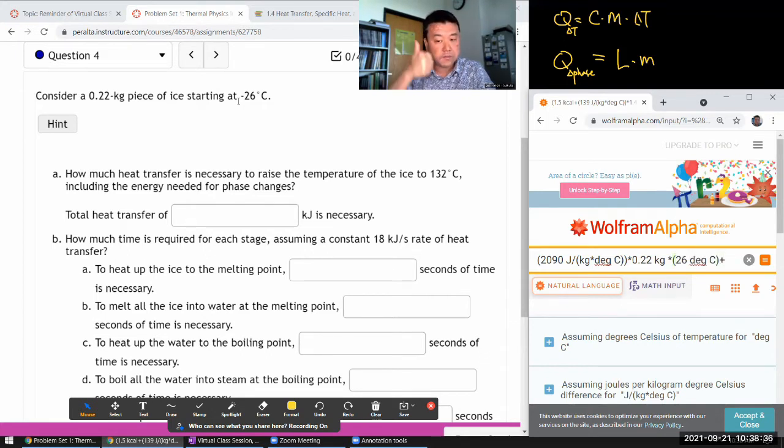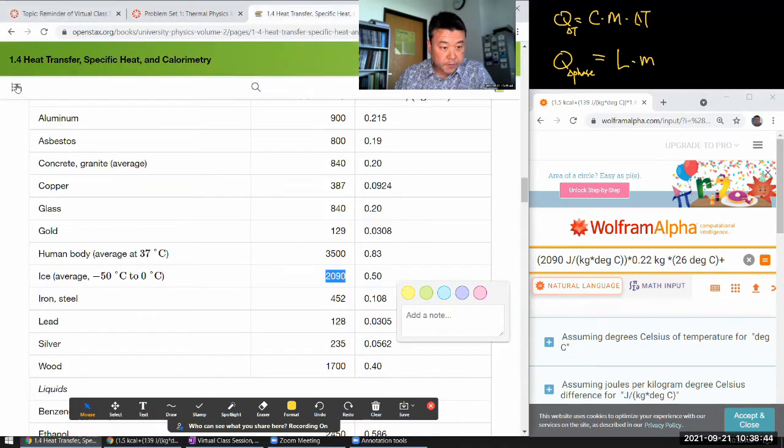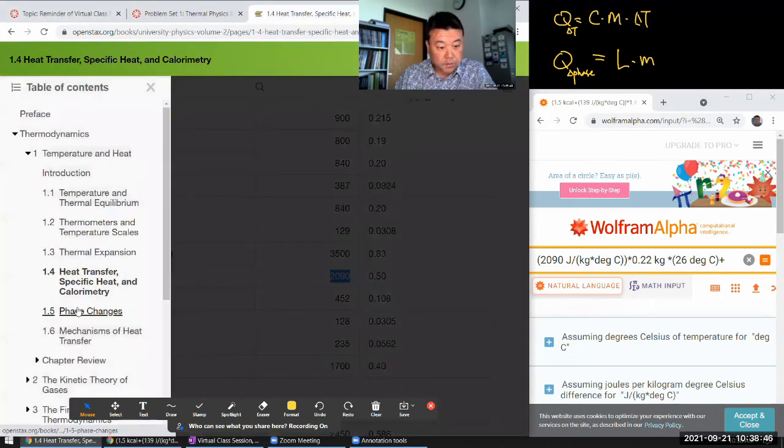The specific heat capacity of ice times the mass of ice, 0.22 kilogram, times the change of temperature. Starting at minus 26 degrees C, it's going to go up to zero. So it'll be a total change of 26 degrees C. That's stage one. And then we have to change ice into water. So there I need to look up a different constant. That's in section 1.5.